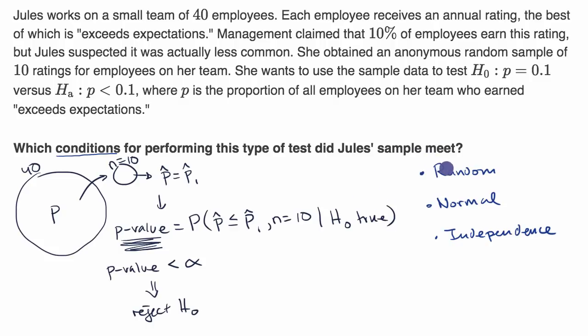The first is the random condition. And that's that the data points in this sample were truly randomly selected. So pause this video. Did she meet the random condition? Well, it says she obtained an anonymous random sample of 10 ratings of employees on her team. They don't say how she did it, but we'll have to take their word for it, that it was an anonymous random sample. So she meets the random condition.